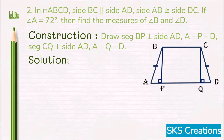In this figure, side BC and side AD are parallel to each other, and BA is a transversal of those two parallel lines. Angle A (that is angle BAD) and angle B (that is angle ABC) are interior angles.